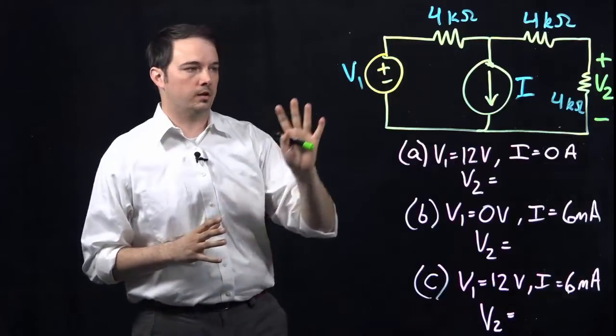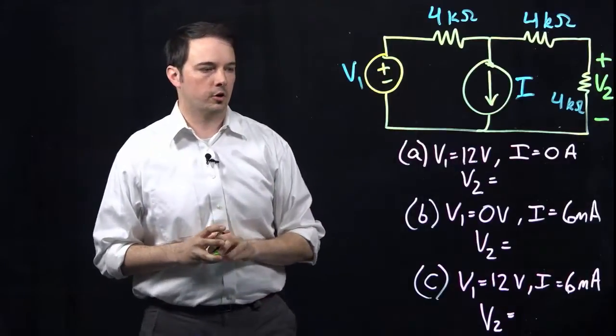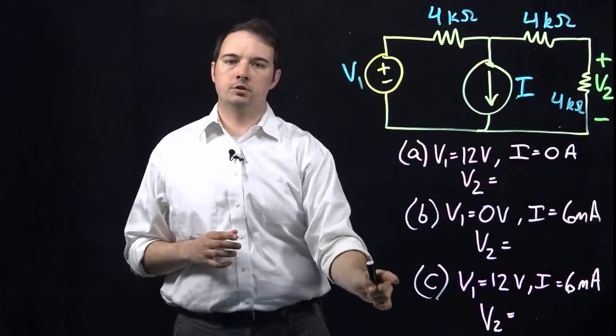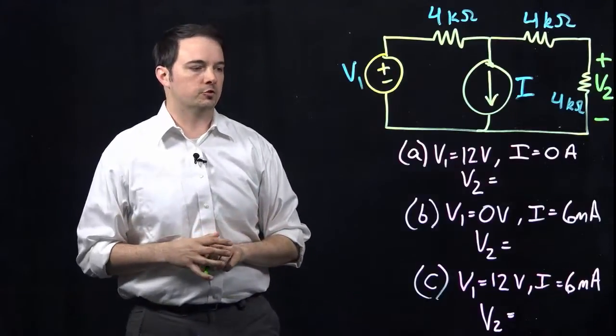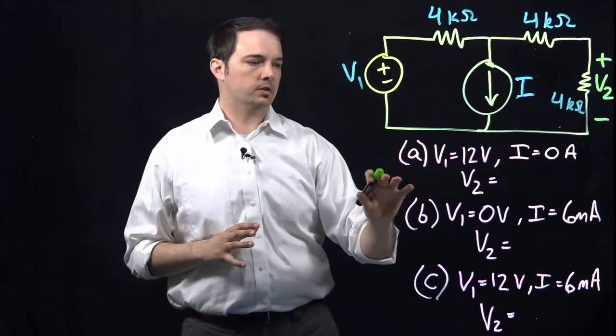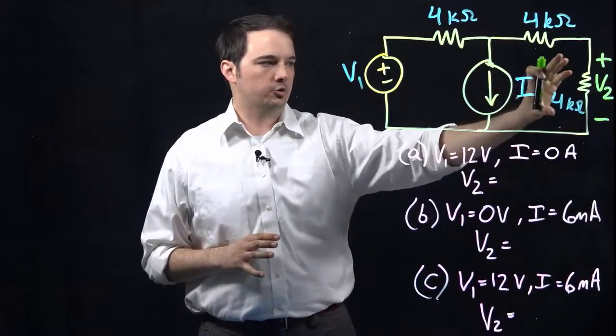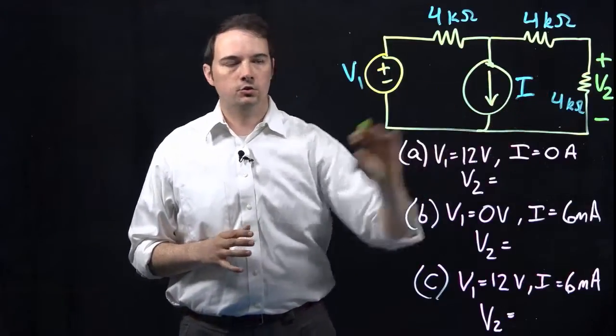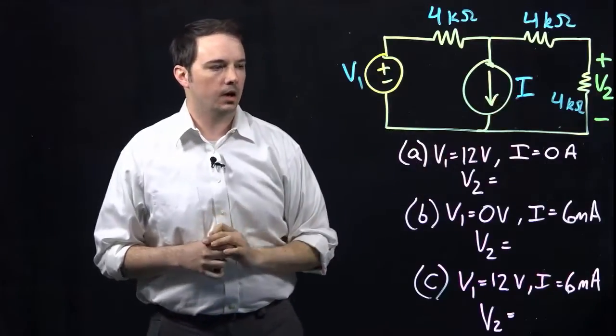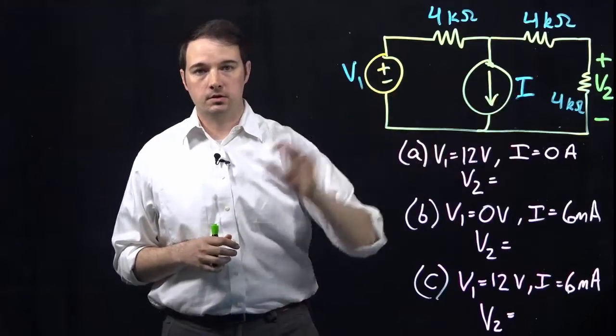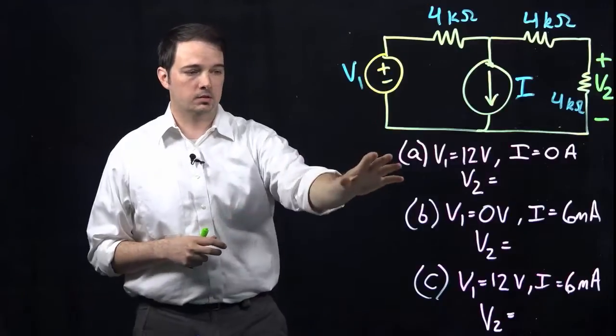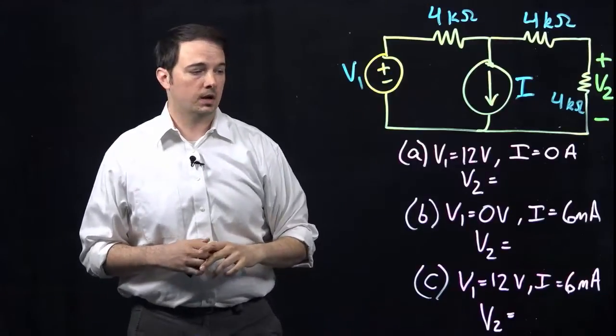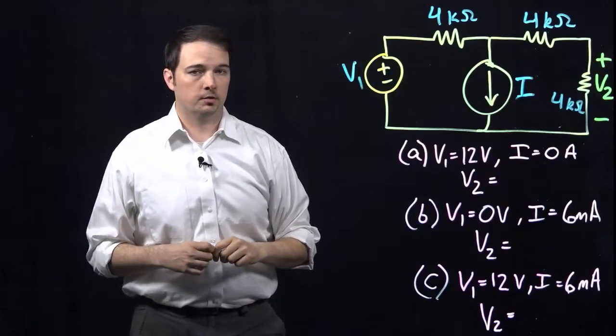So we'll walk through here. I encourage you to copy down the circuit diagram in your notes, and there's going to be three different parts to this problem that we're going to work through individually. Overall, what we're ultimately trying to find is what the voltage V2 is here across this 4 kiloohm resistor due to the impact of both of these sources individually, but it's broken down into three parts, so we'll go ahead and get started with part A.